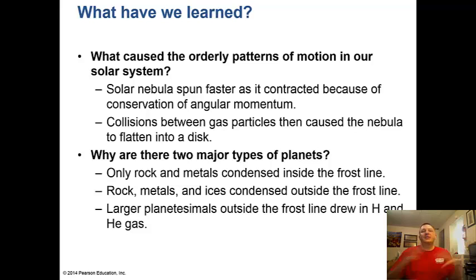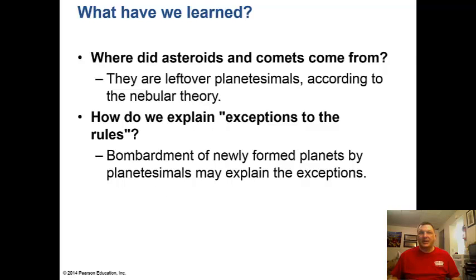Why are there two major types of planets? It's the frost line. Only rock and metal condensed inside the frost line. Rock, metal, and ice condensed outside the frost line, which is between Mars and Jupiter. Larger planetesimals outside the frost line drew in what was left over in hydrogen and helium gas to become the gas giants.